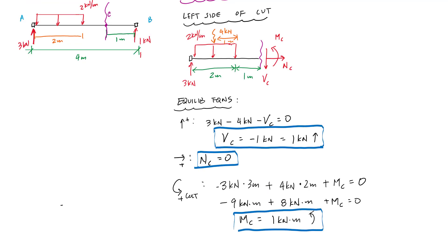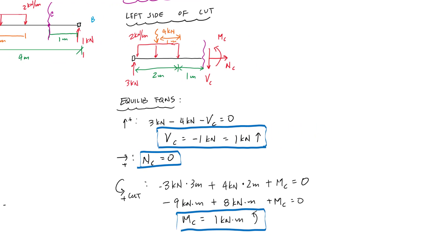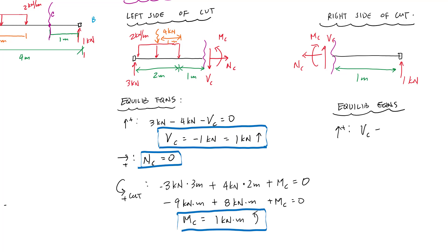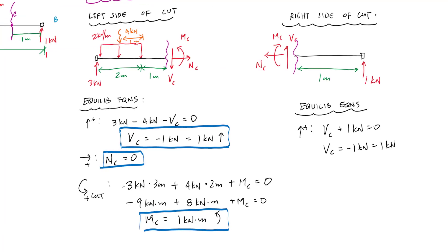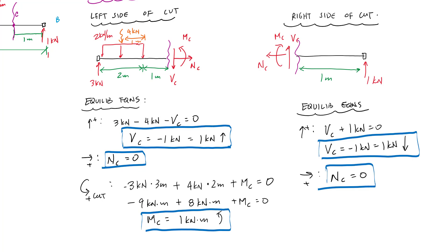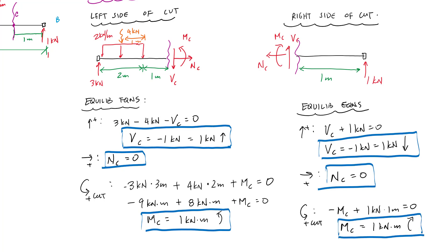I can verify using the right side of the cut, which is actually easier. Drawing the free body diagram assuming positive internal loading: sum of forces in the vertical gives VC plus one kilonewton equals zero, so VC equals negative one kilonewton — one kilonewton pointing down on the right side, equal and opposite to what we found on the left. Normal force is zero. Taking moments about the cut: negative MC plus one kilonewton times one meter equals zero, giving MC equals one kilonewton-meter. Left and right sides are equal and opposite, so you can solve one side and just draw the other equal and opposite.